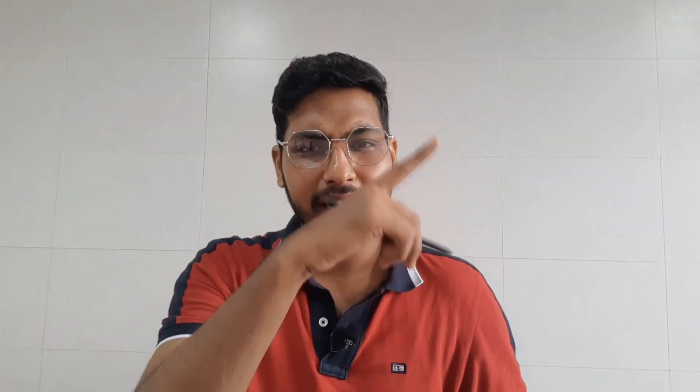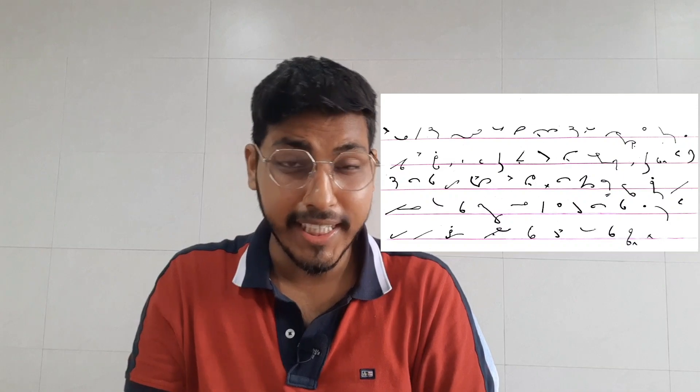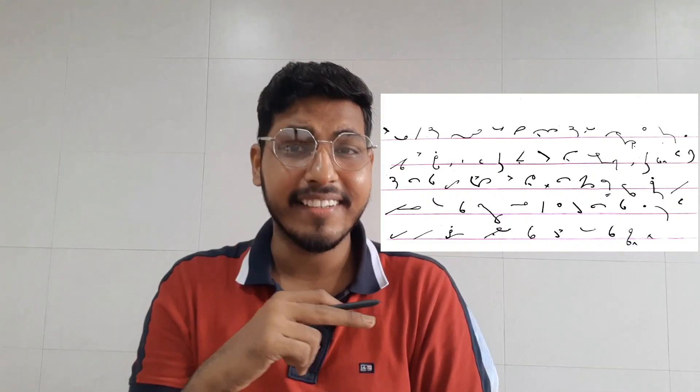Ab isko likhte kaise hain? Simple hai - thoda sa Urdu type dikhne jaisi bhasha hai. Main aapko yahan pe ek pic dikhaunga, aap usse dekh lijiye ke kaisi dikhti hai shorthand. Aur is tarah se jab humein bola jata hai toh hum usse likhte hain, bohot hi fast likhte hain. Normal insaan jo baat karte hain, when a person speaks usually they speak at the speed of fifty to sixty words per minute.